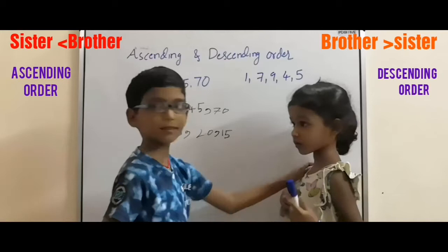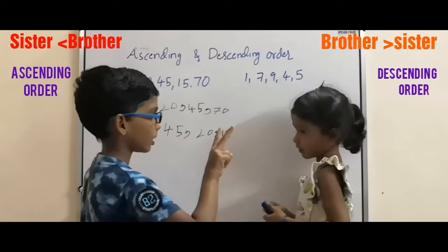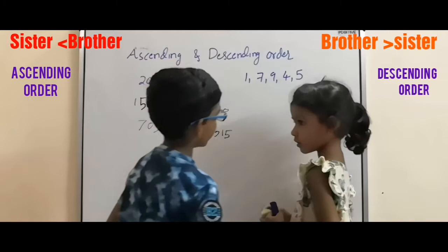My sister will write now. What will you write — ascending order and descending order. Ascending order means small to big.